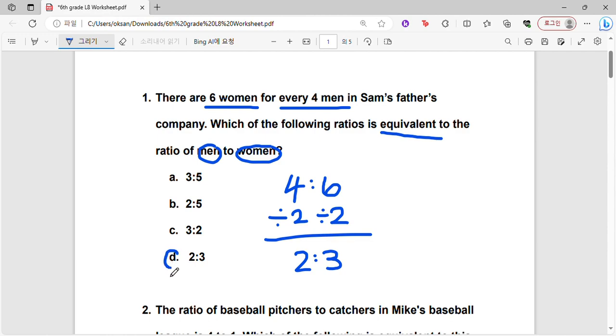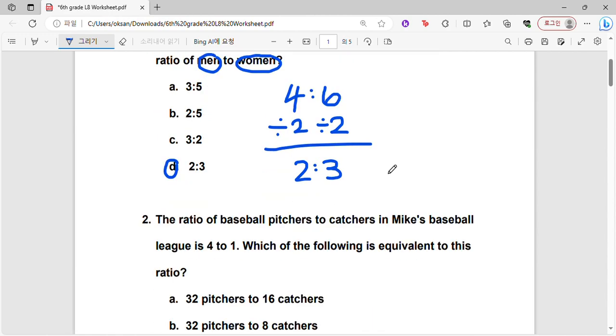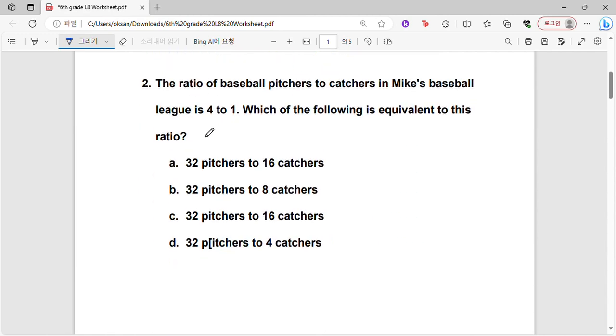Now looking at our options, we have 2:3 here, so D would be the correct answer. Okay, next question: the ratio of baseball pitchers to catchers in Mike's baseball league is 4 to 1. Which of the following is equivalent to this ratio?